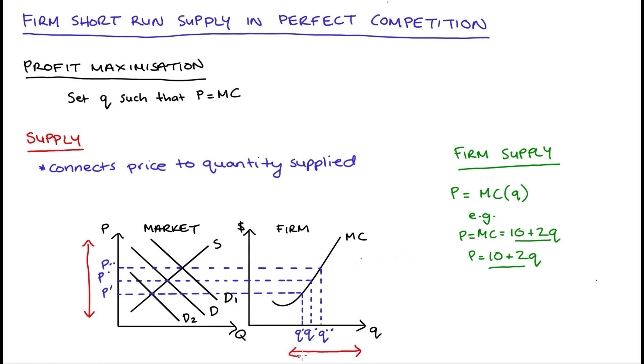So you can see that the relationship then between the price in the market and the quantity that the firm produces can be found by tracing along our marginal cost curve. I've got that in red there. So that's what we mean when we talk about our marginal cost curve as being equal to our firm supply curve.